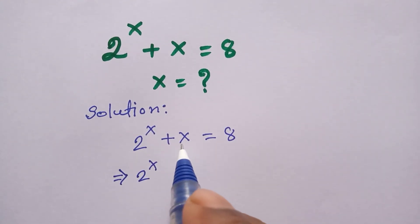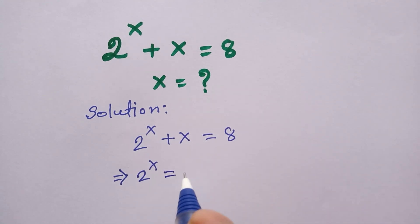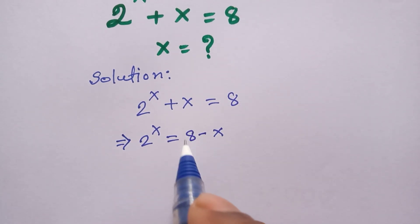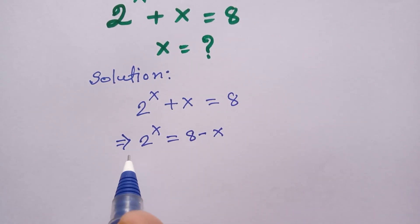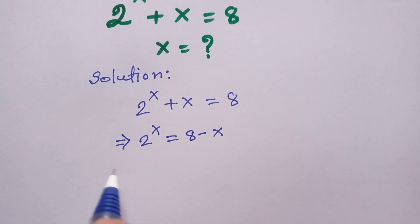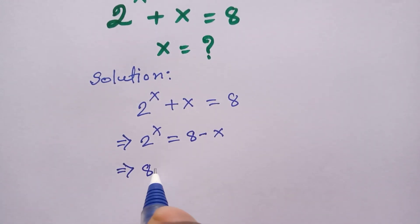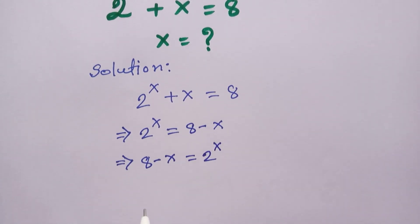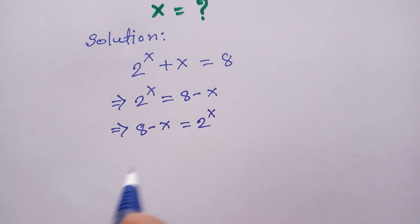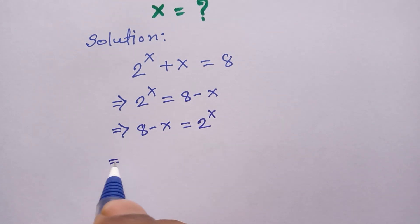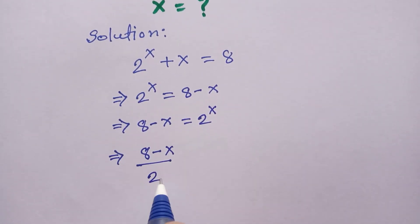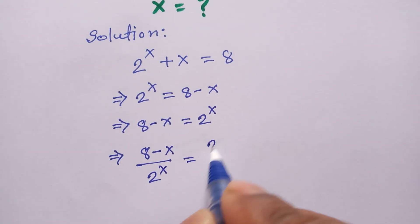Firstly, we take the x and move it to the right side, so it will be 8 minus x. Now we move the right side to the left side and the left side to the right side, so it will be 8 minus x equals 2 to the power 4x. Now we divide both sides by 2 to the power 4x.